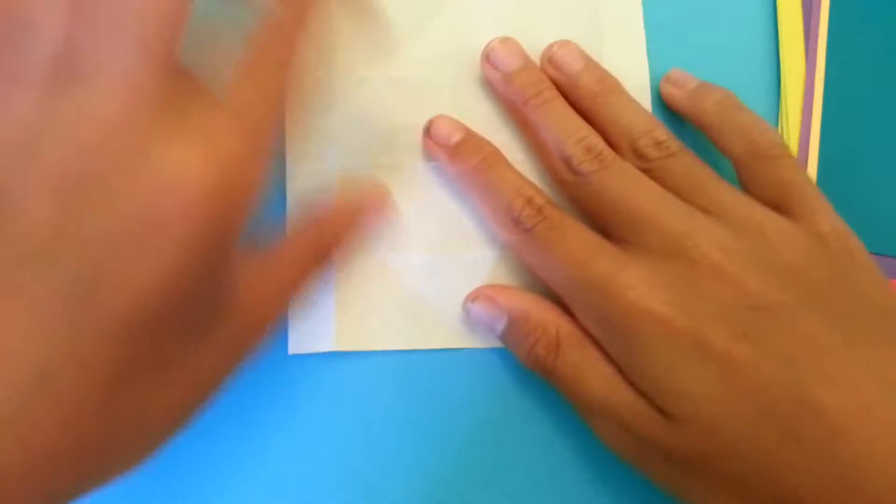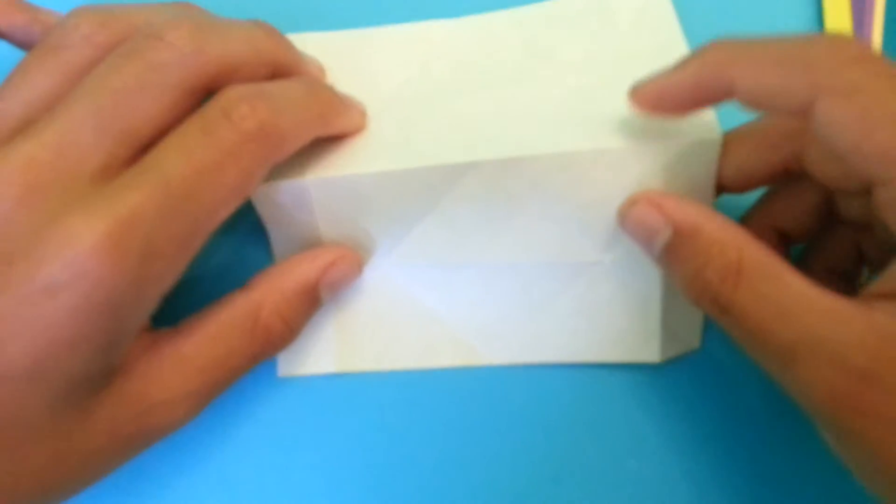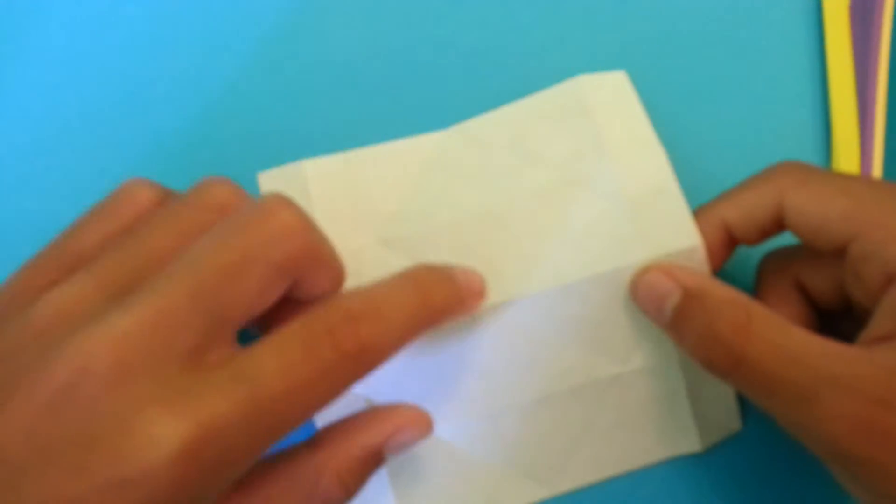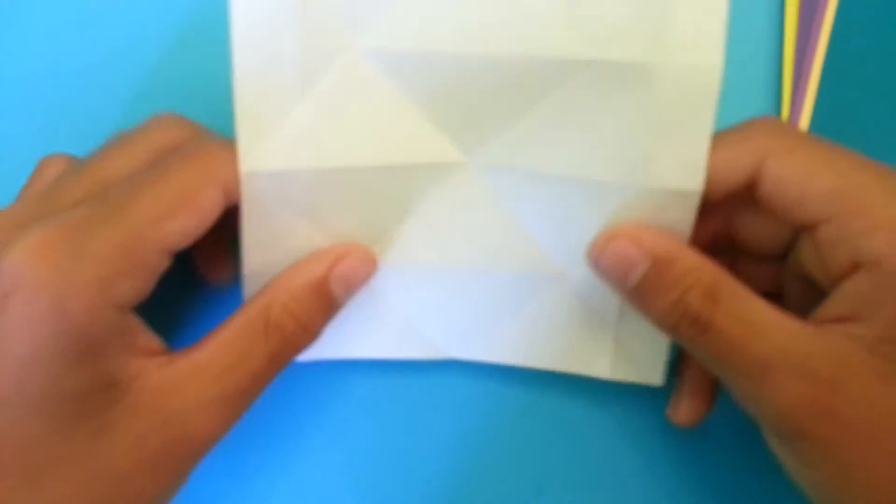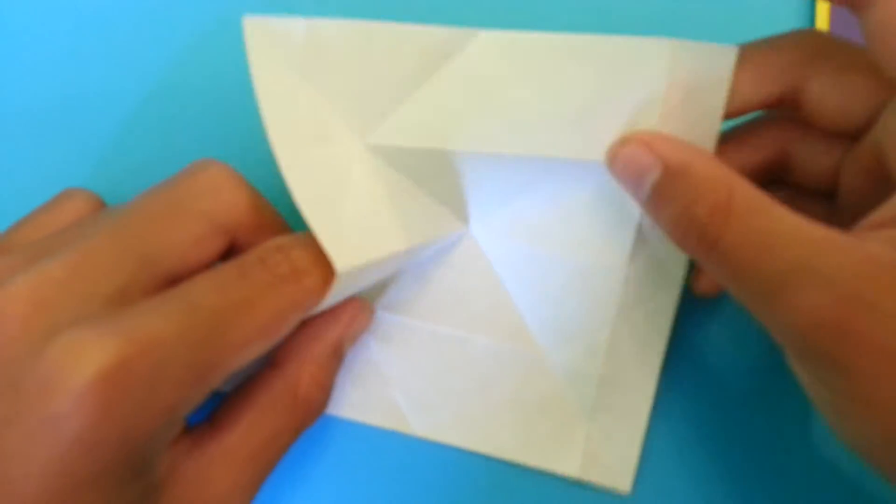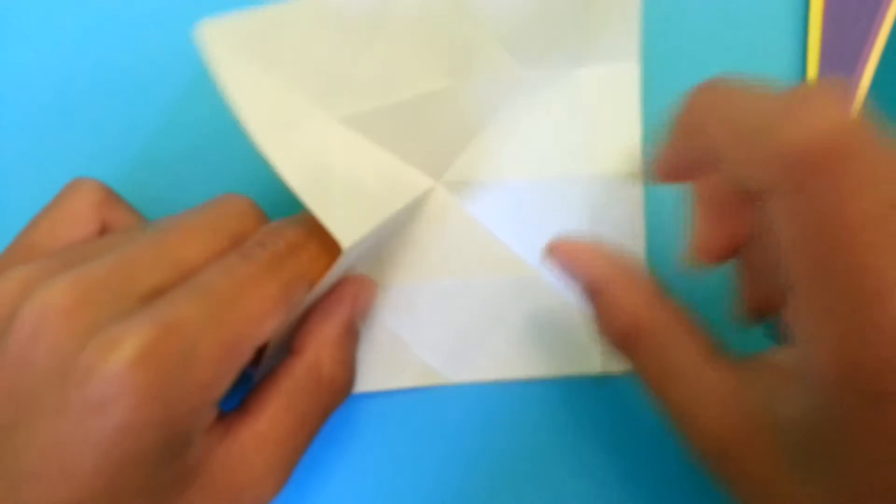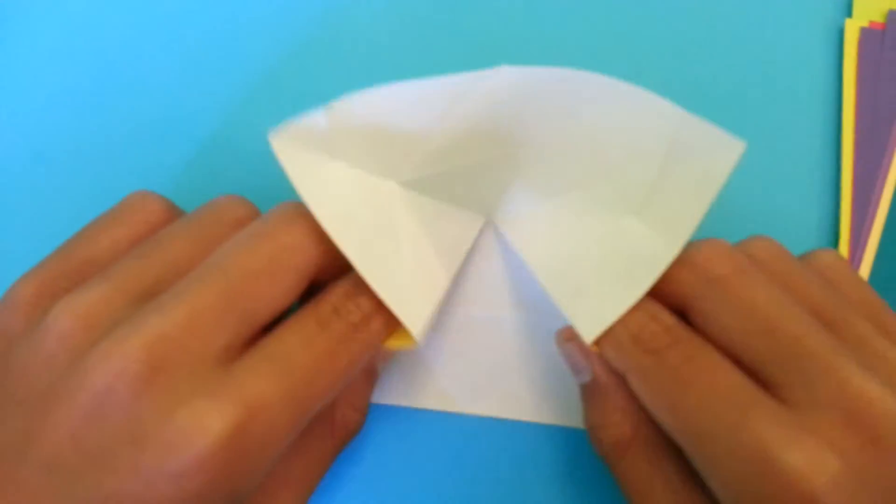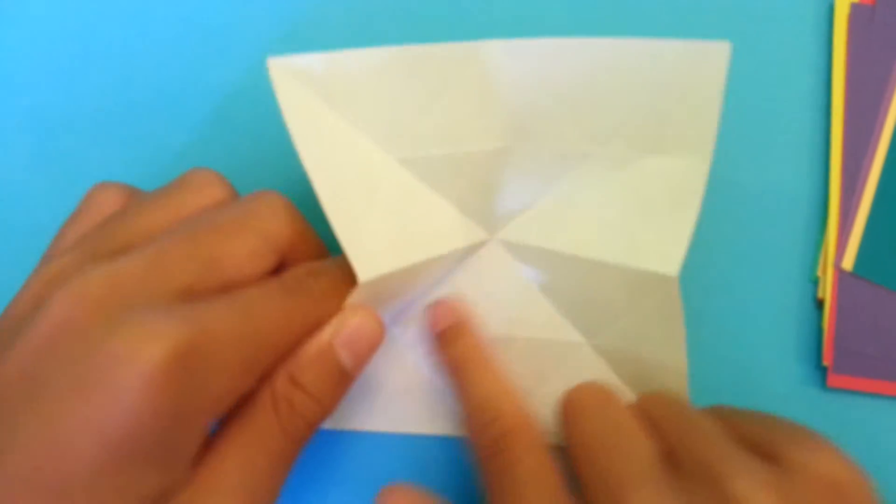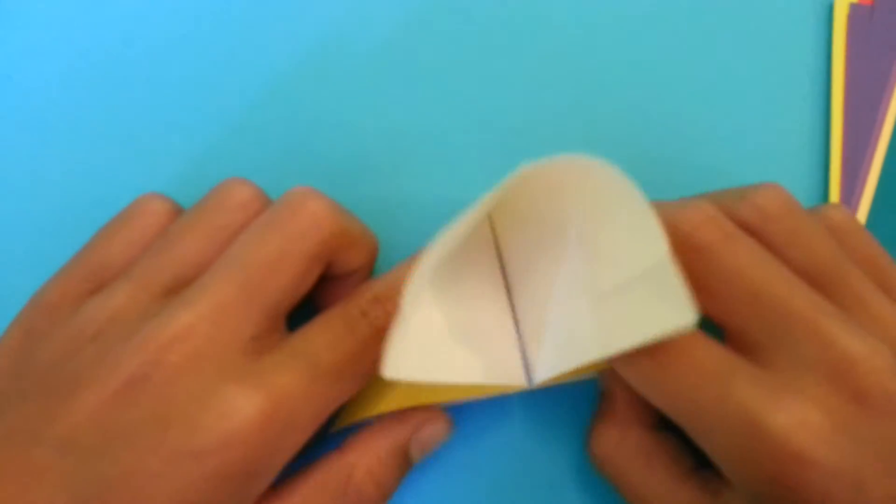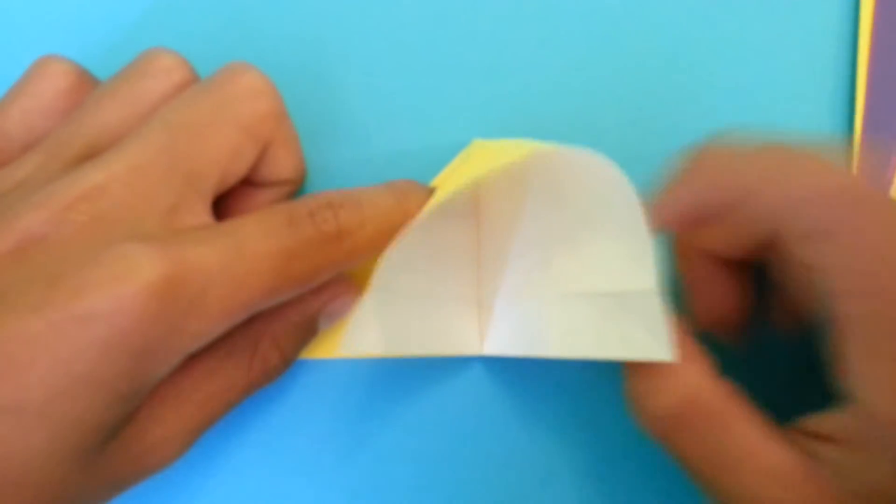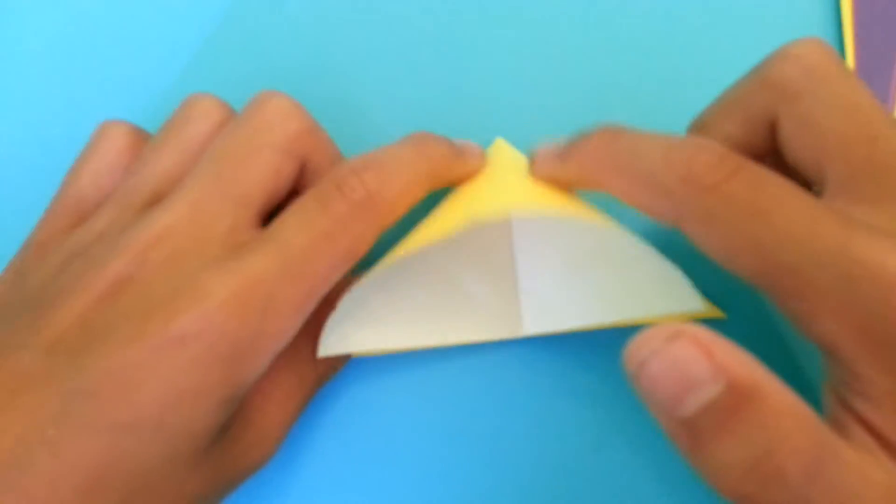Unfold and turn it over to white side up. So now you're going to make a water bomb base. Push in the middle and bring these two edges that we fold down on these two diagonal creases. Now we have this big flap, I'm going to squash that down to make it flat.